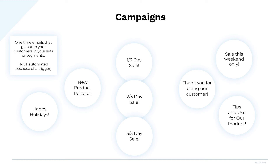A sale going on this upcoming weekend — letting your VIPs, which would be a different segment, know that there is a sale coming up and they can get a sneak peek. You could also send a different one-time send or campaign that talks about tips or uses for one of your most popular products, or for a product to a list of people who have purchased it. All of these are individual campaigns, which makes them different than the automated flows that are triggered by your customer's behavior.